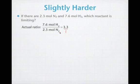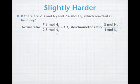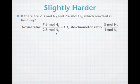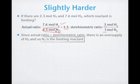Alright, let's take a look at our actual ratio is 3.3 to 1. In this case now, our actual ratio is higher. 3.3 is higher than 3 to 1. What that means now is that we have enough hydrogen gas and it's our nitrogen gas that is going to be limiting.